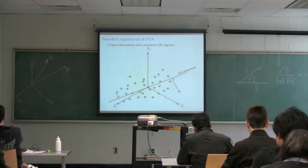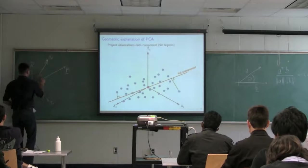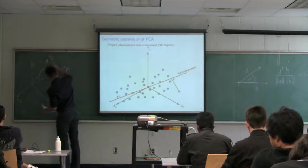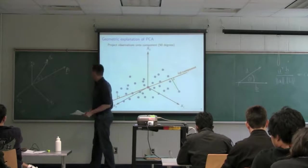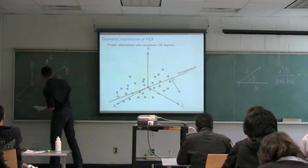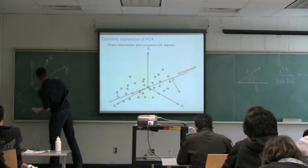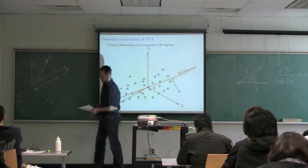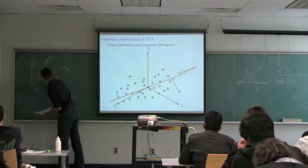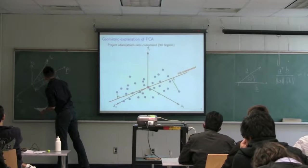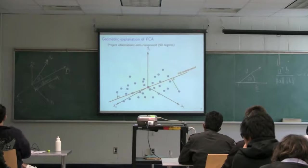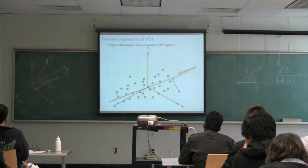There's an angle theta over here. We know that the perpendicular drop down onto that loading vector p gives a distance from the origin. That distance — just to emphasize it's not a vector but a scalar distance — is equal to t_i1, the i-th observation for the first component.